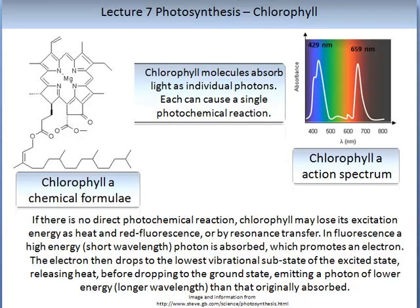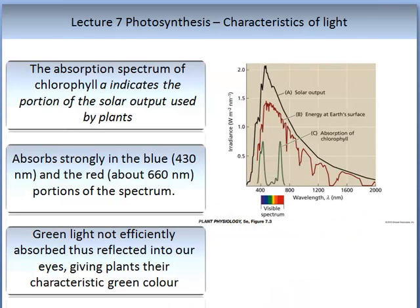In fluorescence, a high-energy or short-wavelength photon is absorbed, which promotes an electron. The electron then drops to the lowest vibrational sub-state of the excited state, releases heat, and then drops to its ground state, emitting a photon of lower energy or longer wavelength than was originally absorbed. Put simply, this means that chlorophyll A absorbs solar radiation in only small regions of the light spectrum.